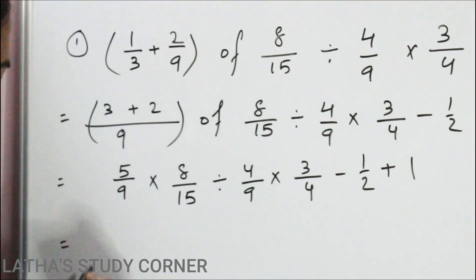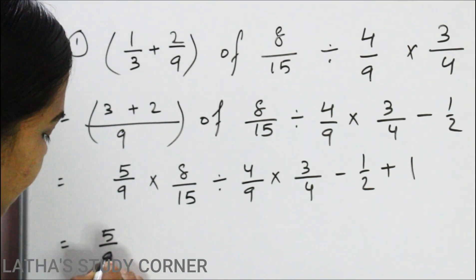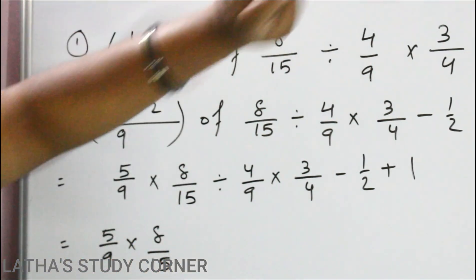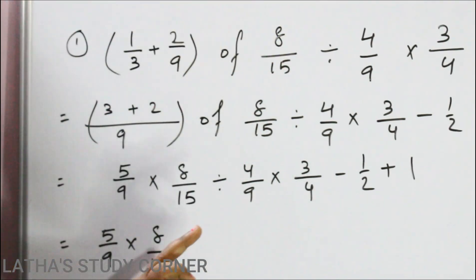Next, you can see here 5 by 9 into 8 by 15. So we already solved bracket is over. Off is over.